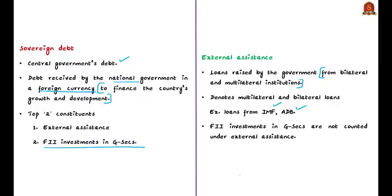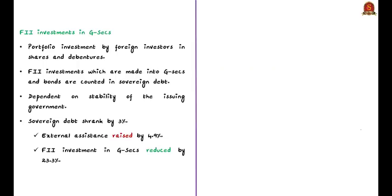Foreign institutional investment or FII is a portfolio investment by foreign investors in shares and debentures. When this investment is made into the government's bonds or securities, the government is liable to pay back to the foreign investors at the time of maturity. So foreign institutional investments made into government securities and bonds are counted in sovereign debt.